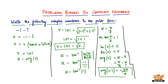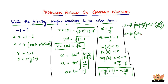Substituting the values of r and theta, we get z equals root 2 times cosine of minus 3 pi by 4 plus i sine of minus 3 pi by 4. Since cos of minus theta equals cos theta, and sine of minus theta equals minus sine theta, this simplifies to z equals square root of 2 times cos of 3 pi by 4 minus i sine of 3 pi by 4. This is the polar form of minus 1 minus i.